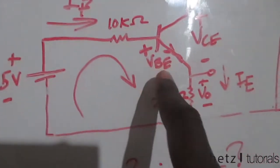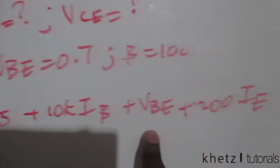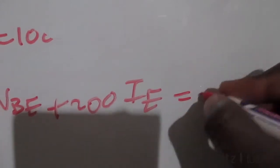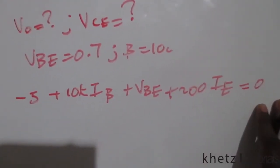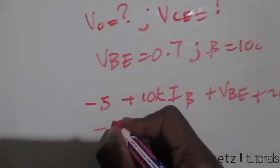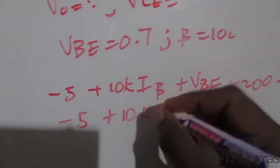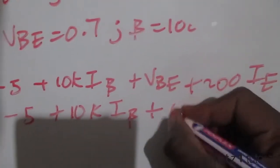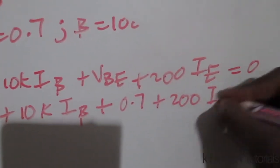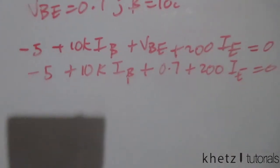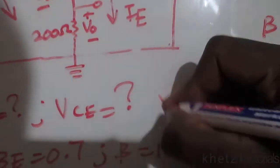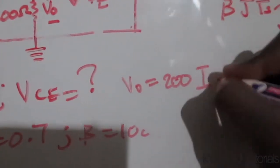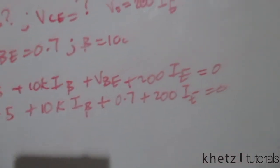Checking the loop: we have 4 elements and 4 terms — everything checks out, so we equate to zero. Substituting known values: negative 5 plus 10k·i_beta plus 0.7 plus 200·ie = 0. We know vo equals 200·ie, but we don't yet know ie or i_beta, so we need to use our BJT equations.